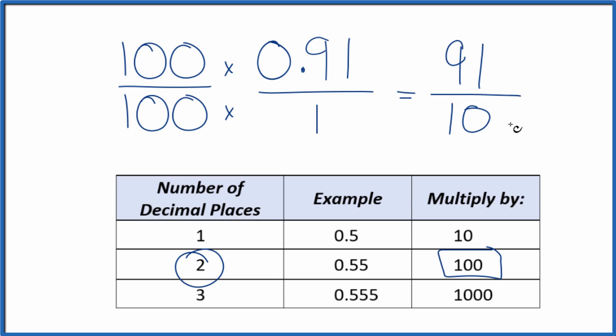And we have our fraction, 91 over 100. So the decimal 0.91 is equal to the fraction 91 over 100. Divide 91 by 100, you get 0.91.